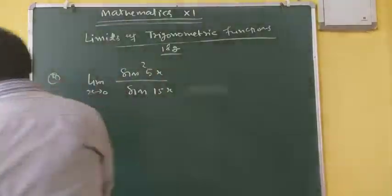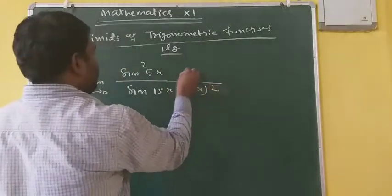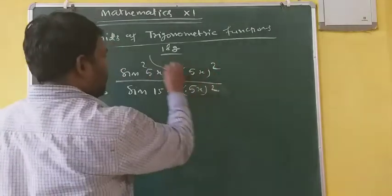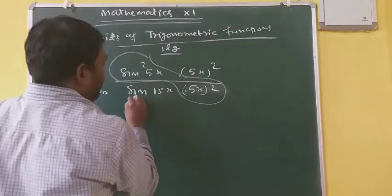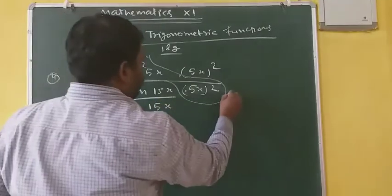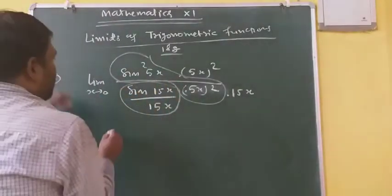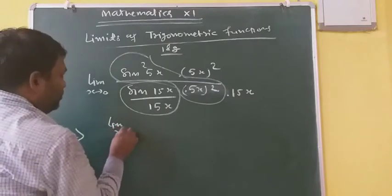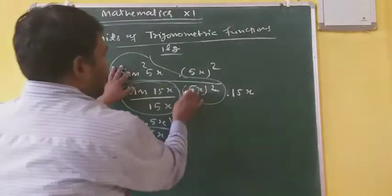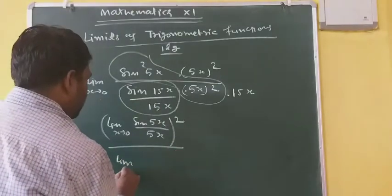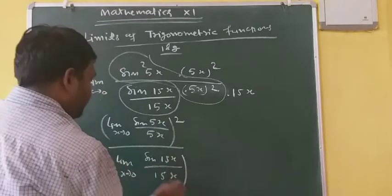We write it as limit x tends to 0 of sin 5x upon 5x whole square, divided by limit x tends to 0 of sin 15x upon 15x whole square, multiplied by the remaining x terms. Both sin 5x/5x and sin 15x/15x will give 1 as x tends to 0.